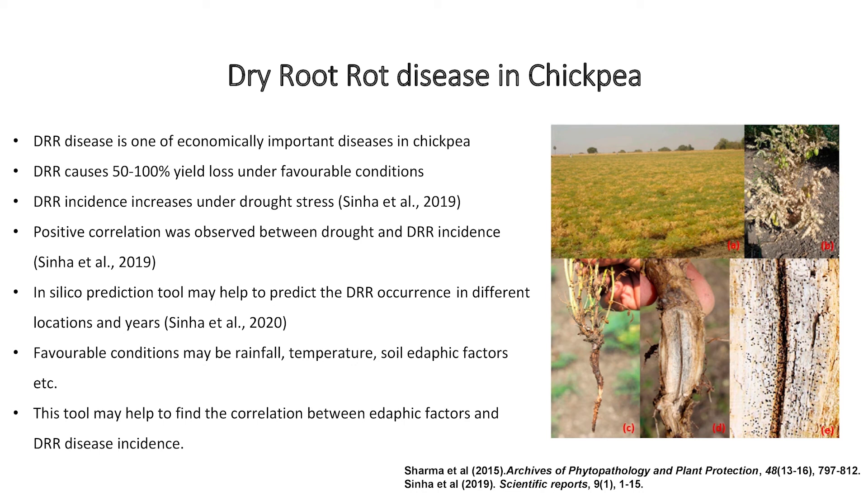Next, I will introduce what is this dry root rot disease in chickpea. DRR disease is one of the economically important diseases in chickpea. DRR causes around 50 to 100% yield loss under favorable conditions. Some of the symptoms of this DRR are drooping and chlorosis of petioles and leaflets. Leaves and stems of affected plants are usually straw colored and in some cases the lower leaves and stems are brown. The taproot turns black with signs of rotting and is devoid of most of the lateral and finer roots. DRR disease incidence increases under drought stress and there is a positive correlation between drought stress and DRR incidence.